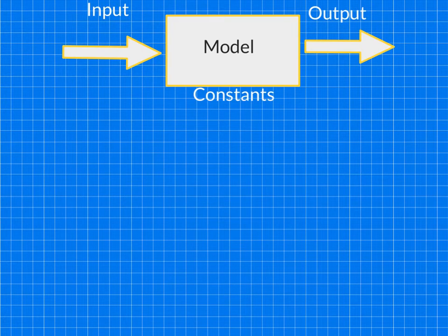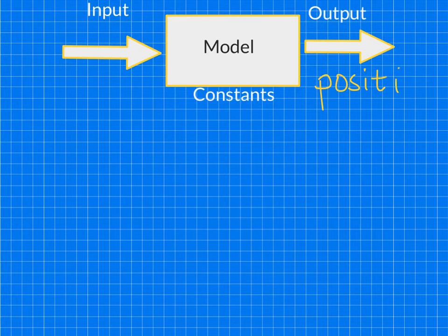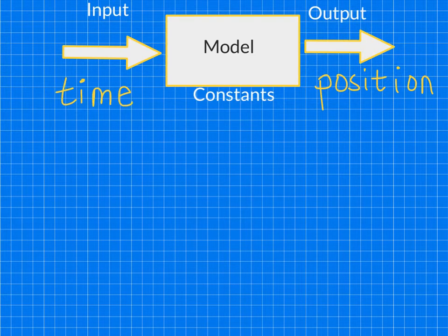So here we have the model diagram. Remember the model is like the machine — like that box. We have an input and an output variable. The output is going to be position because that's what we want to actually solve for — that's what we're trying to predict. We want the model to spit out a final position of the car at a given time. So we want to put a time into our model and have it crank out the position.